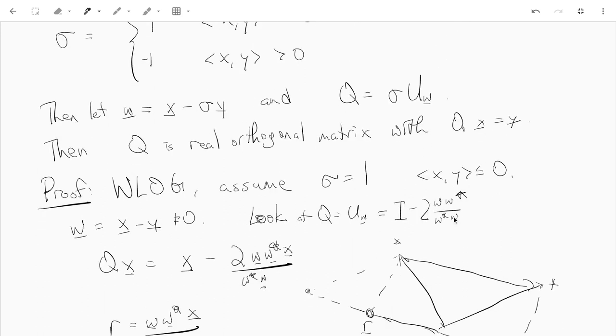So we can just assume that sigma equals one. The dot product of x and y is less than or equal to zero. First of all, that tells us that w is non-zero. Because if w was equal to zero, then x would be y, and the dot product between the two would be greater than zero. So w is non-zero. And recall, the Householder matrix we construct is Uw, which is the identity minus two times the projection onto w. Remember, that's just ww star over w star w. Remember, w is x minus y.